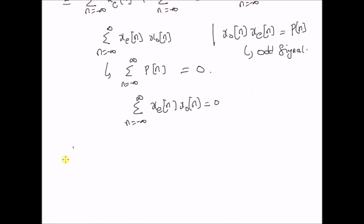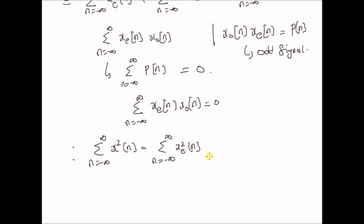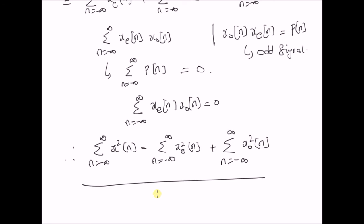Therefore, the energy of the signal x of n — that is, summation n equal to minus infinity to plus infinity of x squared of n — is equal to the sum n equal to minus infinity to plus infinity of x_e squared of n, the energy of the even component, plus the energy of the odd component, which is summation n equal to minus infinity to plus infinity of x_o squared of n. Thus, the energy of a signal can be written as a sum of the energies of its even and odd components. Thanks for watching.